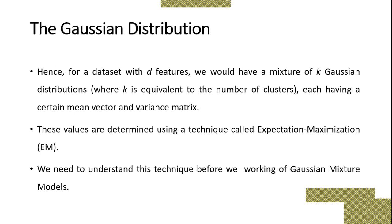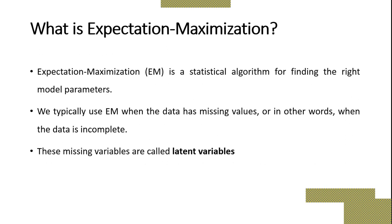We need to understand the EM technique before working on the Gaussian Mixture Model. What is Expectation Maximization? EM is a statistical algorithm for finding the right model parameters. We typically use EM when the data has missing values, or in other words when the data is incomplete. When you have missing values in your dataset, you use Expectation Maximization. This missing value is called a latent variable — whatever value is missing in your dataset is called a latent variable.